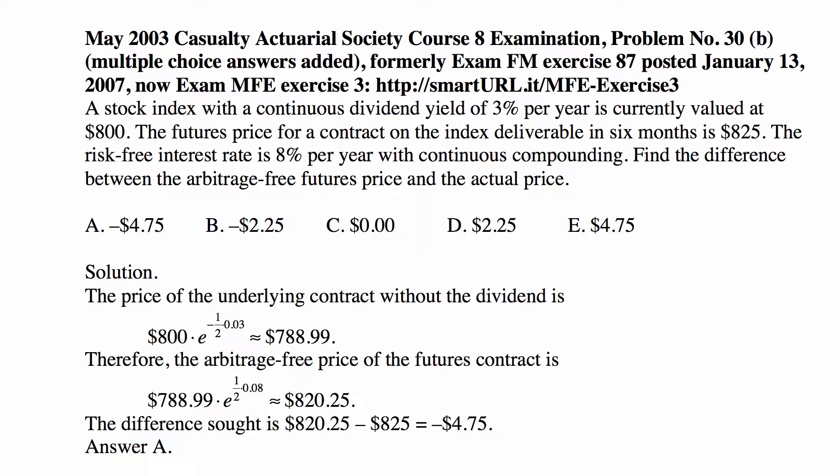Formerly it was just text, and now I'm showing you a video and hopefully explaining it the best I can. We have a stock index with a continuous dividend yield of 3% per year, currently valued at $800. The futures price for a contract on the index deliverable in six months is $825. The risk-free interest rate is 8% per year with continuous compounding. Find the difference between the arbitrage-free futures price and the actual price.